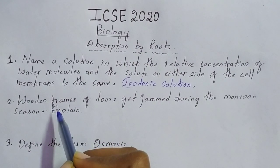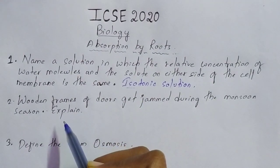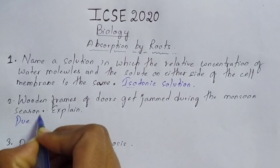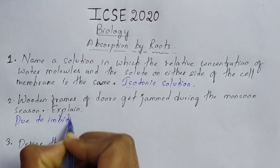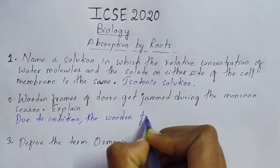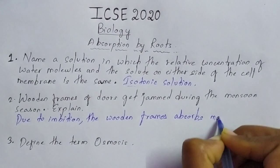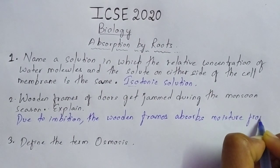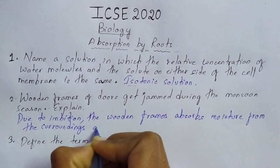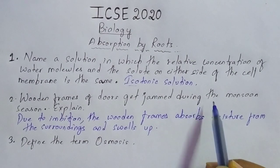Moving on to the next question, which is a 'give reason' type of question. The question is: wooden frames of doors get jammed during the monsoon season — explain why this happens. This is due to the phenomenon of imbibition. The wood absorbs moisture from the surroundings and swells up. This is the reason why wooden frames of doors get jammed during the monsoon season.